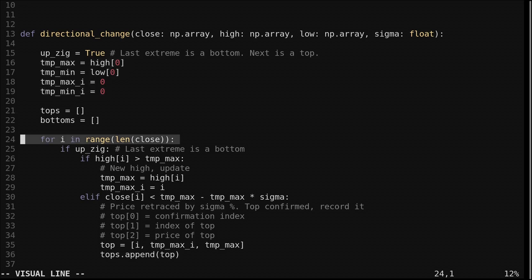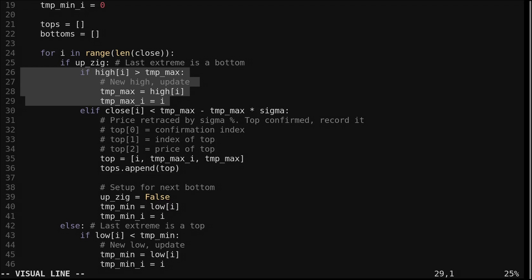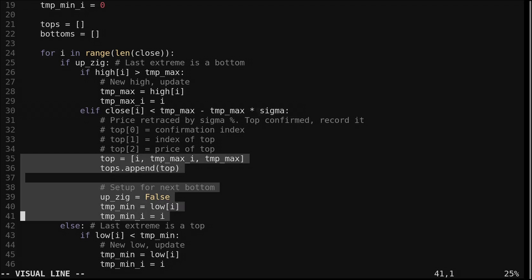We loop through each candle in the dataset. If the last confirmed extreme was a bottom, we go into this block. If we find a higher high, we update the pending top variables. Otherwise we check if the price has closed beyond our retracement threshold.